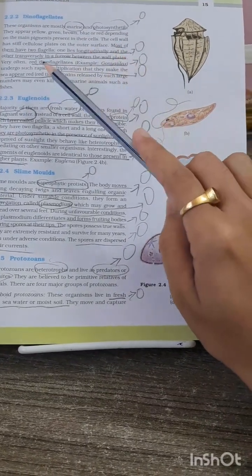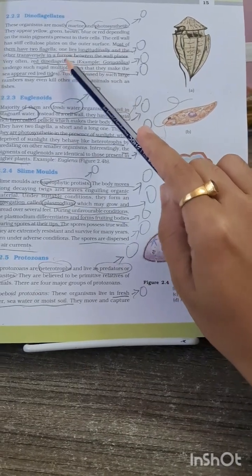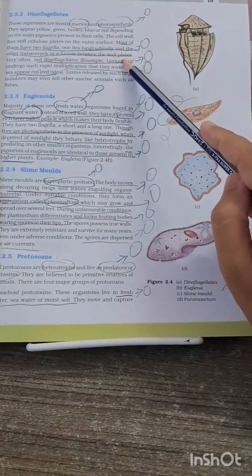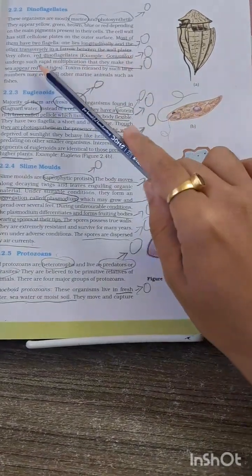The next MCQ from dinoflagellates can be about the red dinoflagellates, which has been asked many times. Red dinoflagellates are Goniaulax. This has been asked many times, and these red dinoflagellates, due to their rapid multiplication, make the sea appear red. This MCQ has also been asked many times.